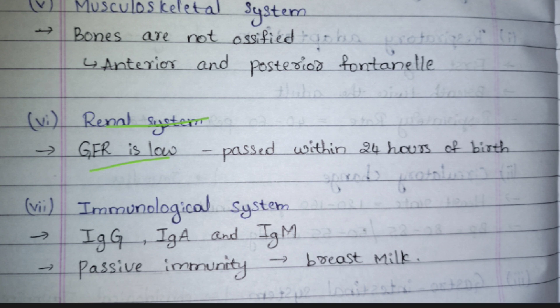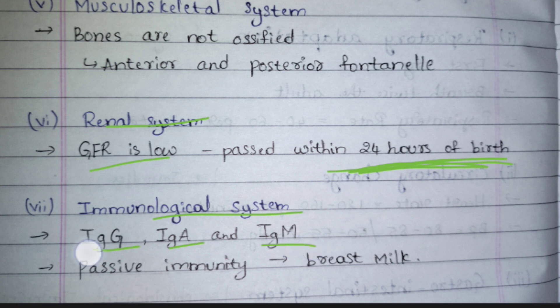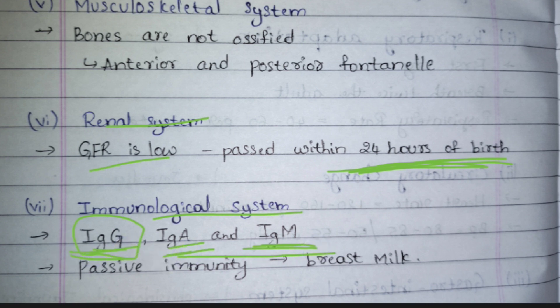In the renal system, GFR is low, meaning urine output is very low. Urine output can be seen in a baby within 24 hours after birth. In the immunological system, IgG, IgA, and IgM are very important. IgG can cross the placental barrier and reach the baby through the placenta, whereas IgA and IgM cannot cross the placenta — they stay outside and enter the baby by other means. This immunity provided by the mother through IgG, IgA, and IgM while in the womb is not available after birth.